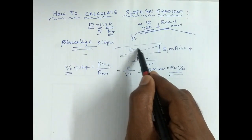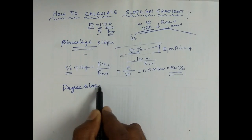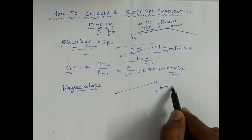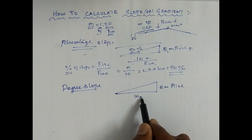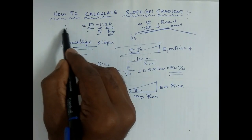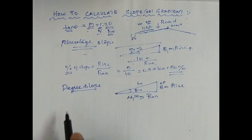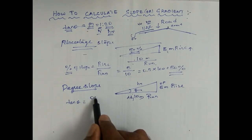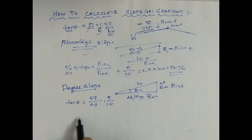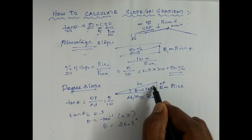Next is the degree method. Same as inclination — 5 meter rise, 10 meter run. The slope equals m, using the tan rule: tan theta equals opposite over adjacent, so tan theta equals 5 by 10 equals 0.5. Therefore theta equals tan inverse of 0.5, which gives theta equal to 26.5 degrees.